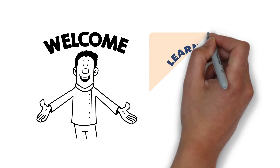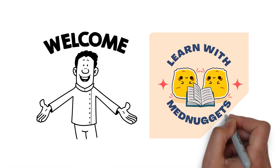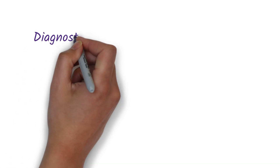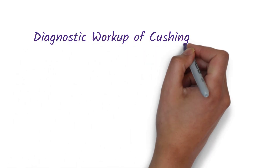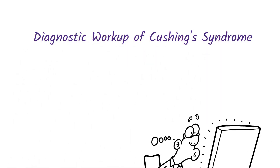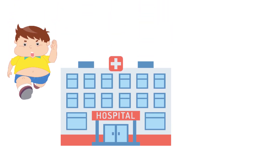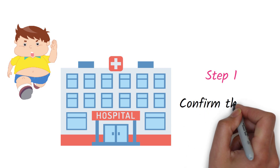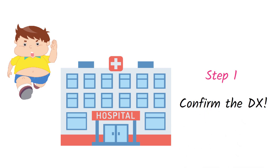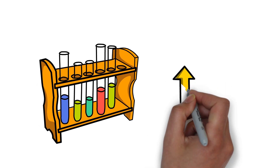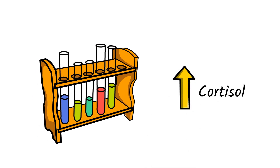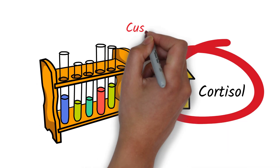Welcome back to Learn with Med Nuggets. In this video we will teach you how to diagnose Cushing's syndrome. When a patient with Cushing's syndrome-like symptoms presents to the hospital, the first step is to confirm the diagnosis. This can be done by ordering a few tests to confirm the high cortisol level in blood, which is indicative of Cushing's syndrome.